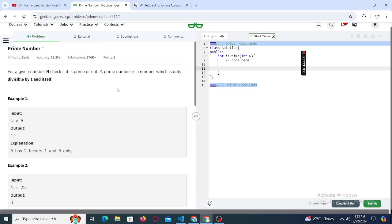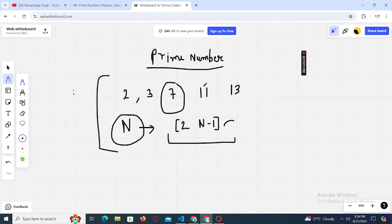Hello, hi everyone, welcome back to the channel. So today in this video lecture we'll be solving this problem: prime number. In this problem we basically have a number n, an integer number, and we are supposed to check whether it is prime or not. A prime number is one which is actually divisible by one and itself.